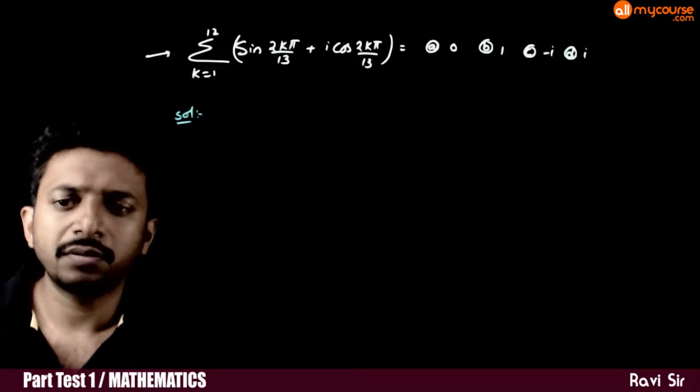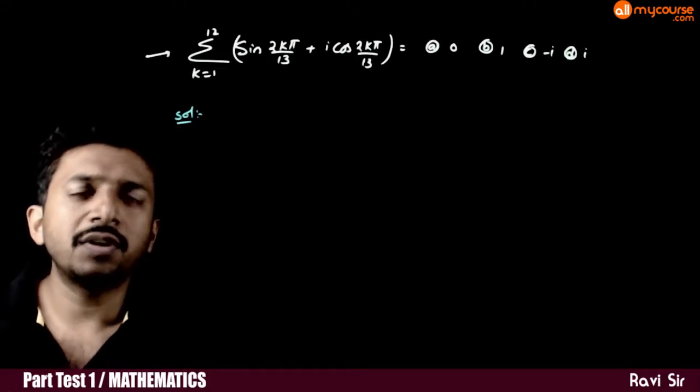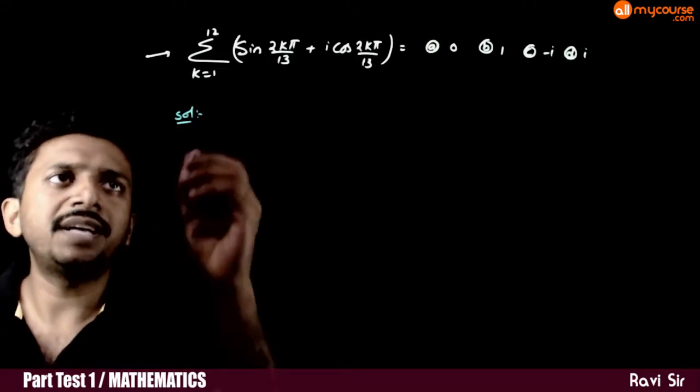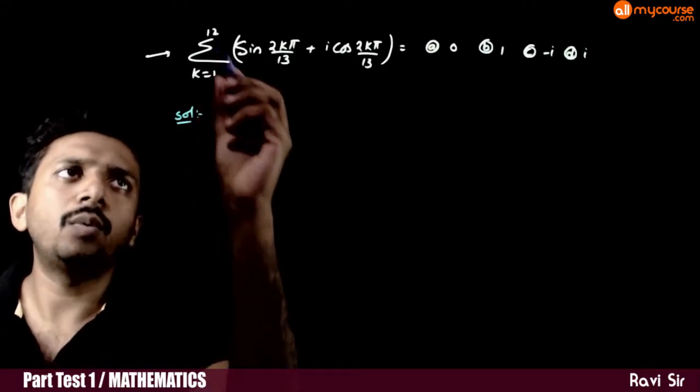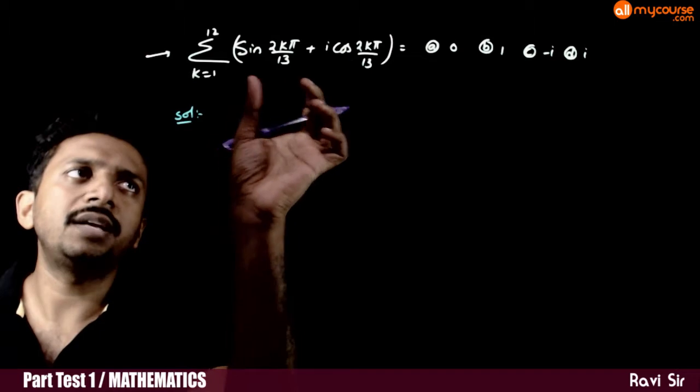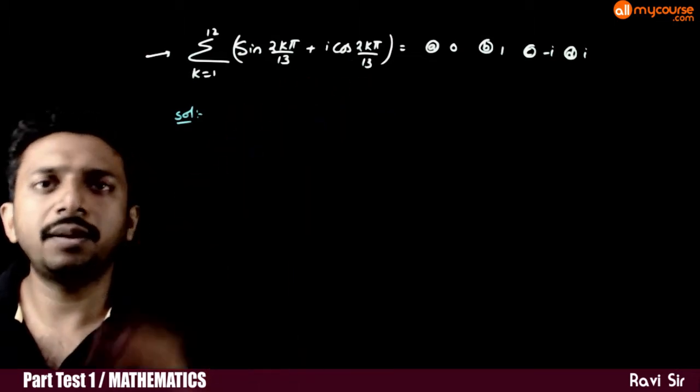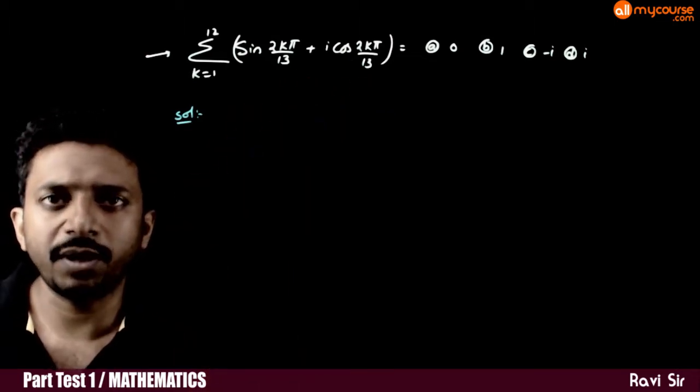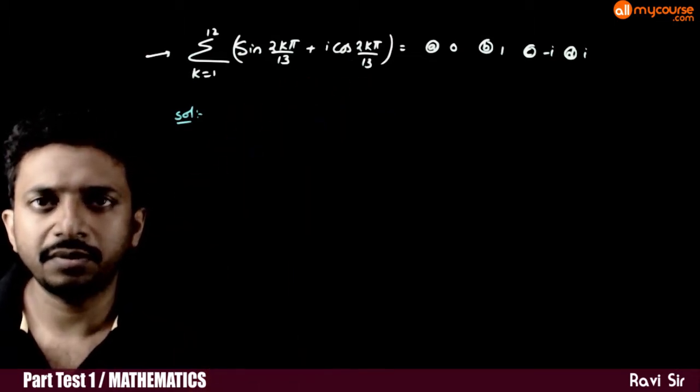Welcome students. In this question, you are asked to find sigma k equal to 1 to 12 of sin(2kπ/13) plus i·cos(2kπ/13).